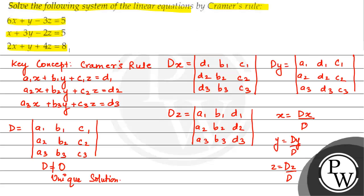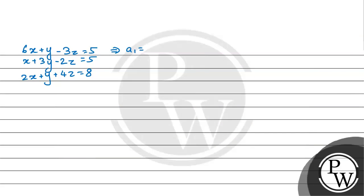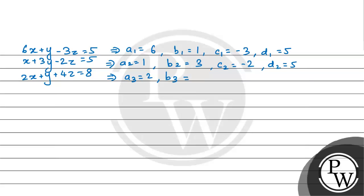Let us see what equations are given. We have 6x plus y minus 3z is equal to 5, then x plus 3y minus 2z is equal to 5, then 2x plus y plus 4z is equal to 8. So: A1=6, B1=1, C1=−3, D1=5; A2=1, B2=3, C2=−2, D2=5; A3=2, B3=1, C3=4, D3=8.